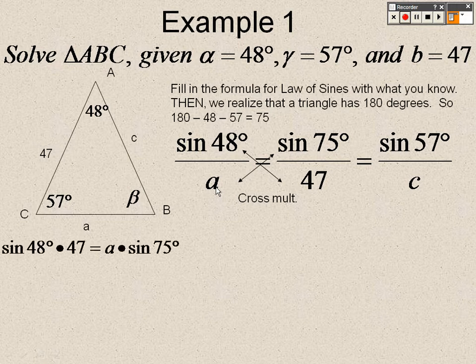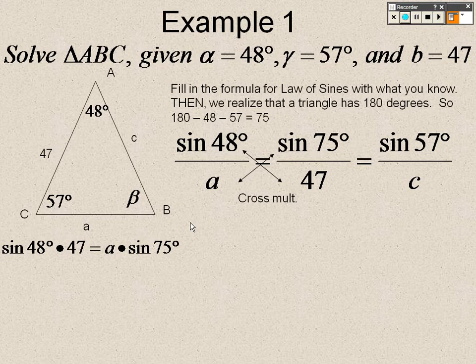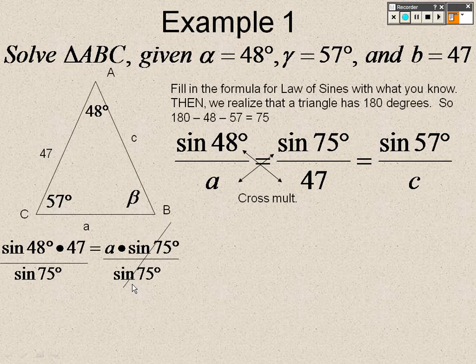So when I do this, I cross-multiply. I get sine of 48 degrees times 47 equals A times sine of 75. So to get A by itself, I divide both sides by sine of 75 degrees. And I'm getting A is approximately 36.16.